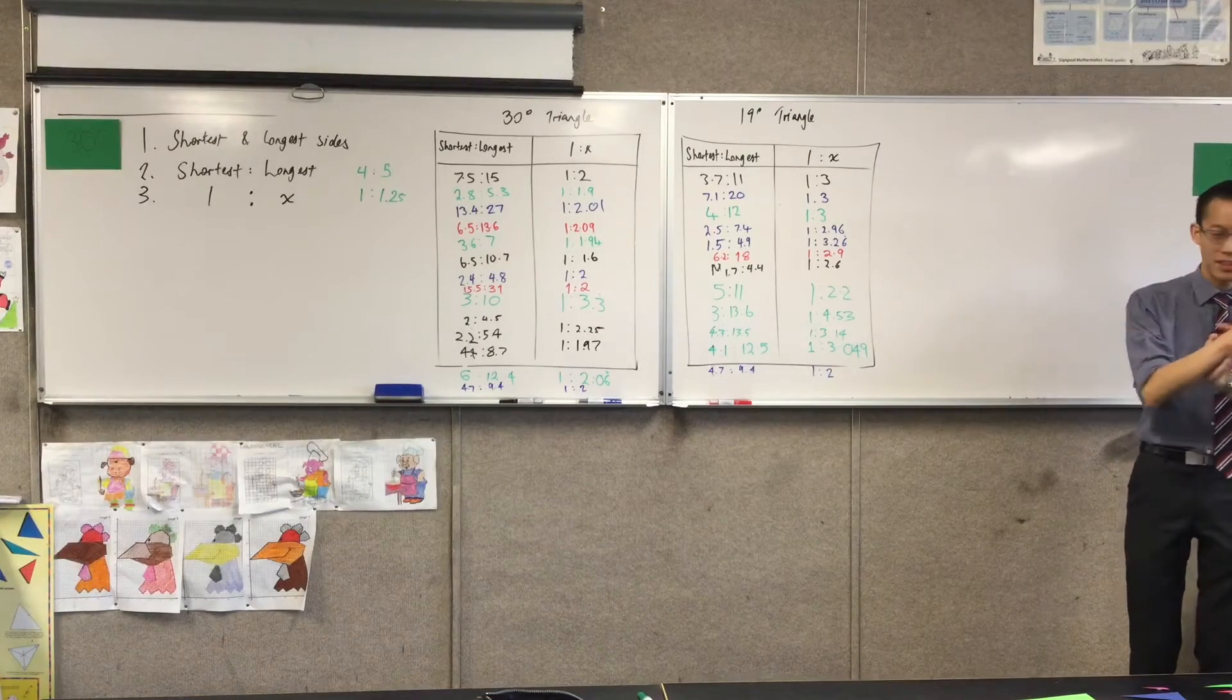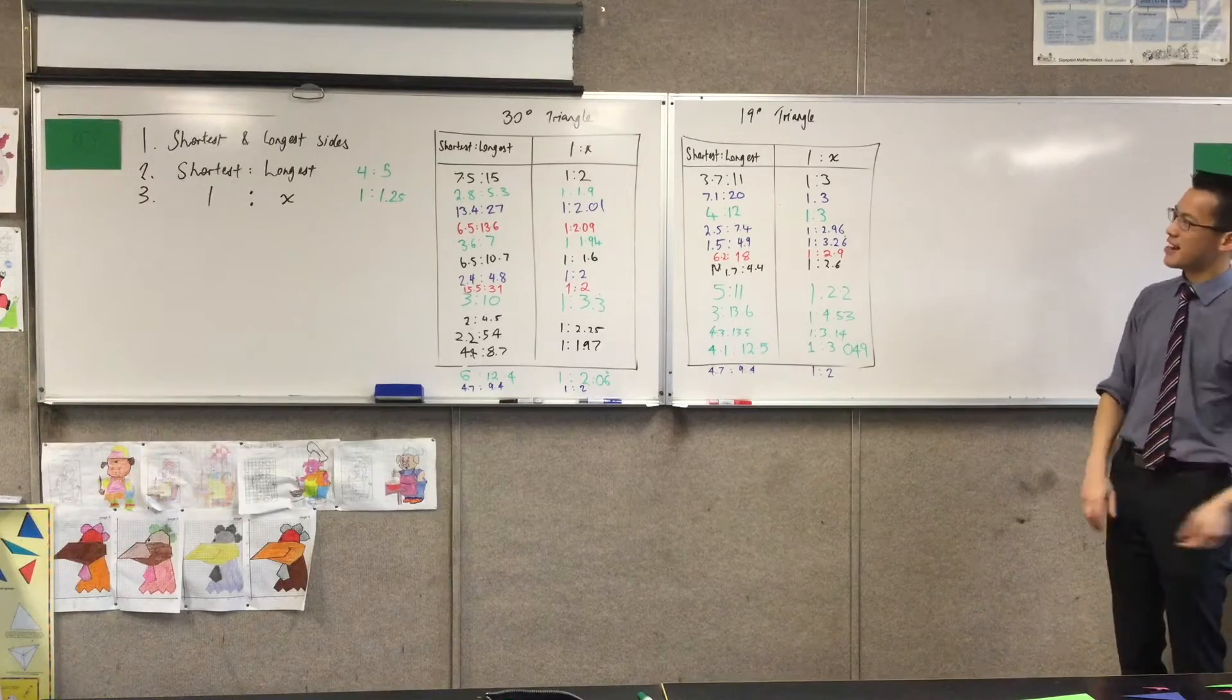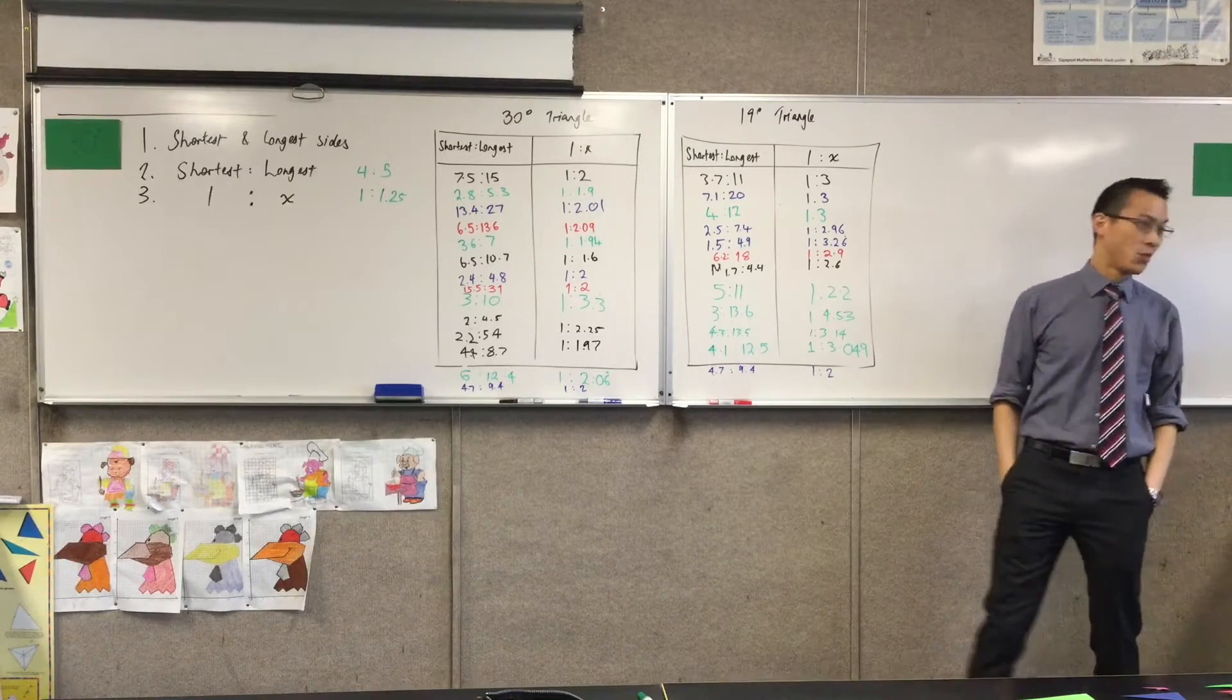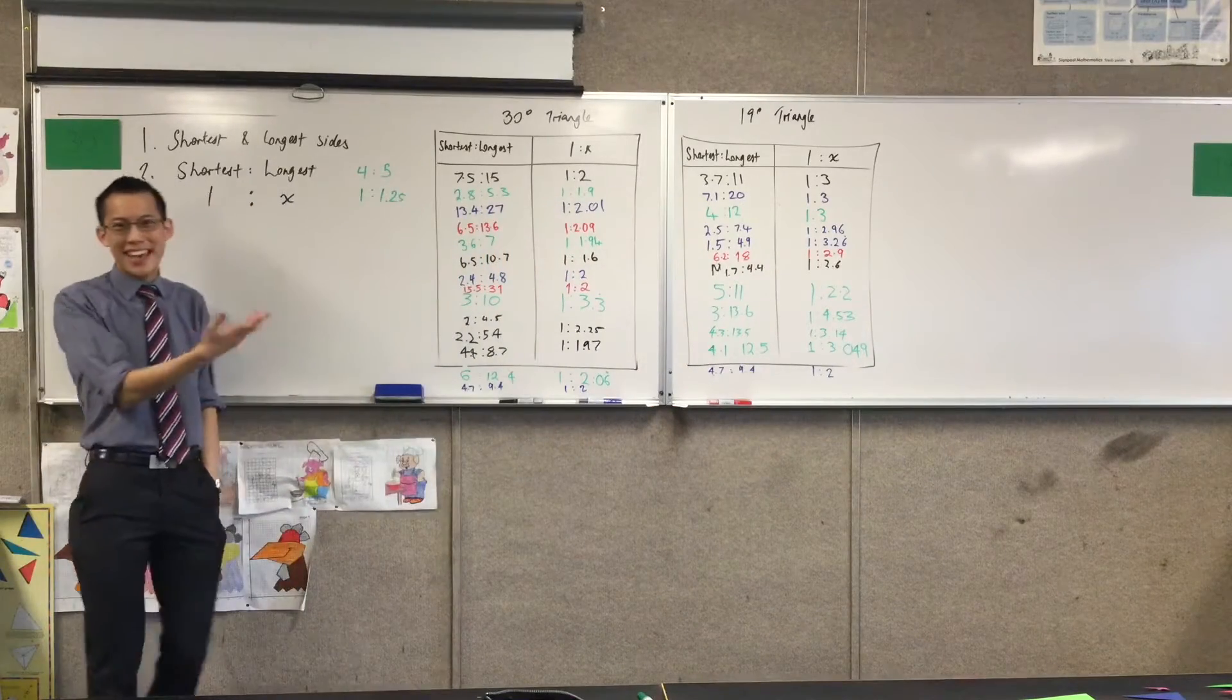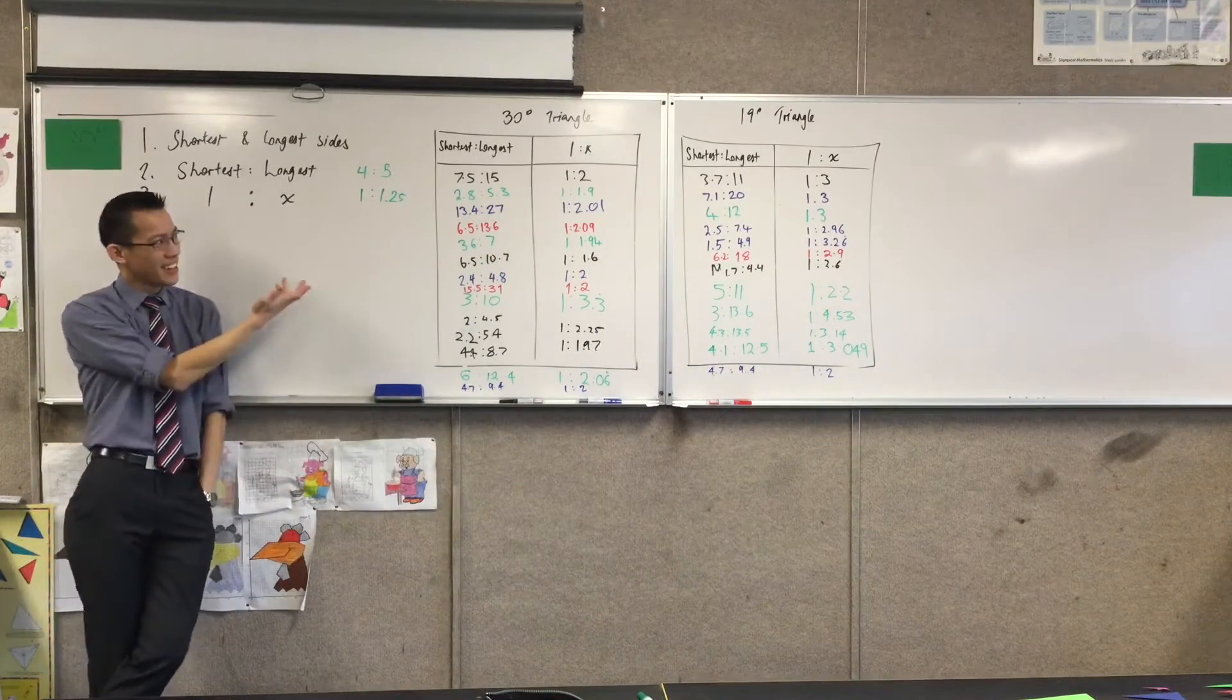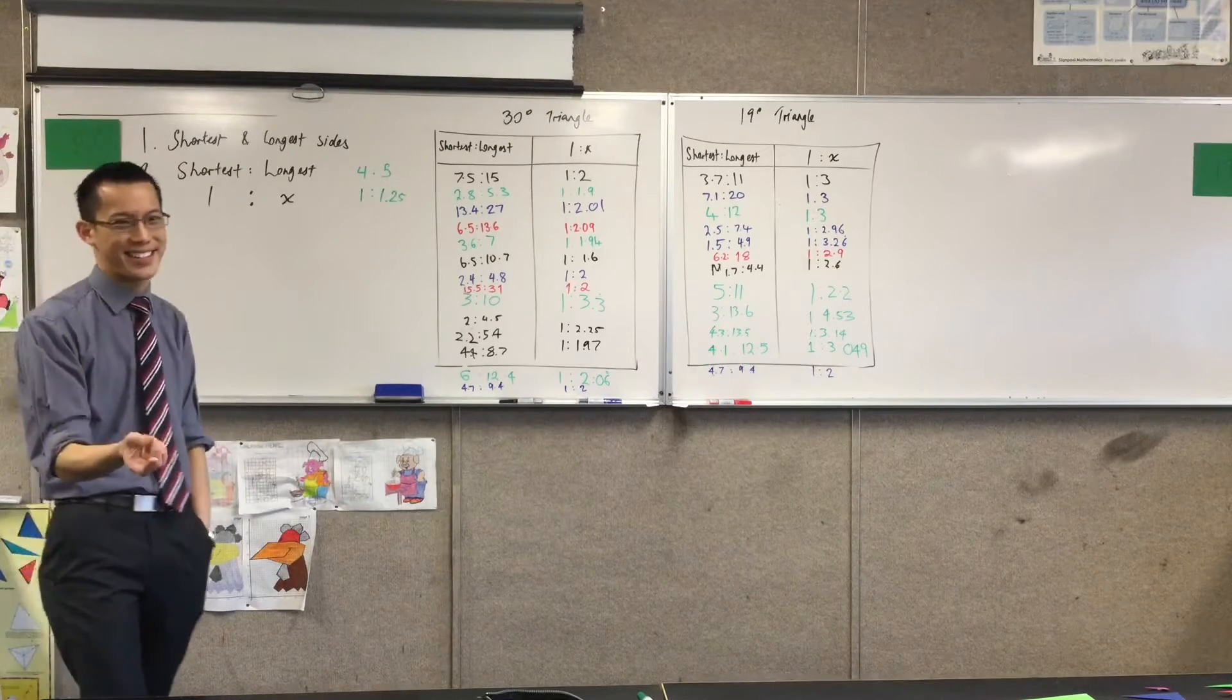Mathematicians have a special name for that, which I'll tell you in a minute. But I just want to notice what on earth is going on, because when mathematicians see something like this, we like to call this in the business a smoking gun. Clearly, with the exception of maybe one or two numbers, there seems to be a pattern, right?